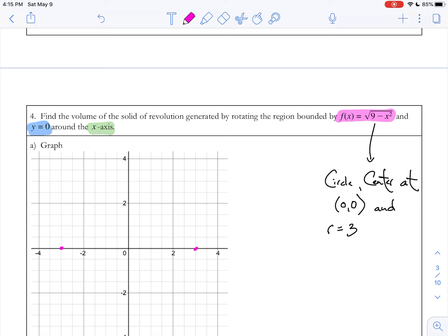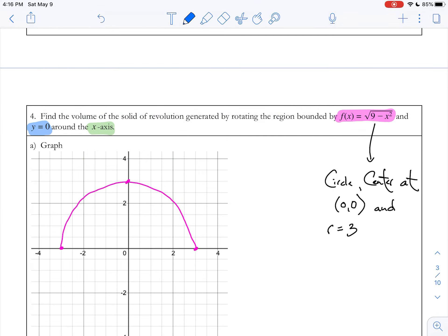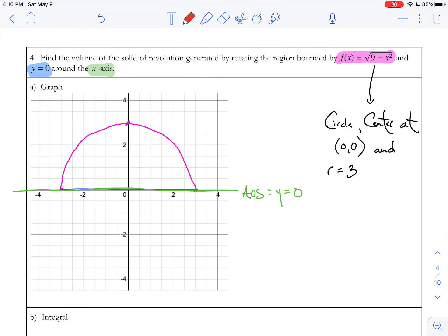So let's plot that graph. I know that it's going to have a radius of 3, but since it's only the positive square root, I only have to have the top half of the circle. Where is y equals 0? Well, y equals 0 is here, so that helps us bound our shape. And then my axis of revolution is here. Axis of revolution equals y equals 0.